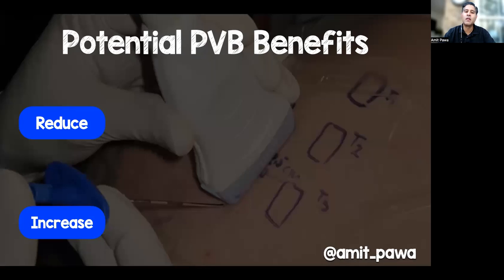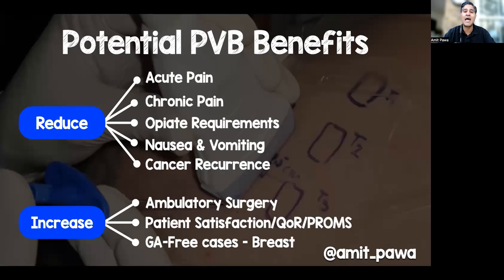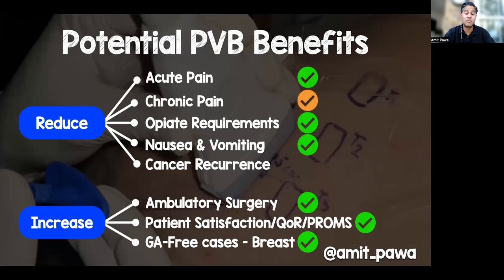When we look at the potential benefits of paravertebral blocks there are many purported benefits: the effect on acute and chronic pain, opioid requirements, nausea and vomiting, and maybe even cancer recurrence, as well as the ability to ambulate patients quicker, to have better patient-reported outcome measures, and the ability to avoid general anaesthesia in certain cases. The evidence in many of those situations has been proven, though chronic pain evidence is a bit variable, and we may never get evidence for the impact on cancer recurrence.